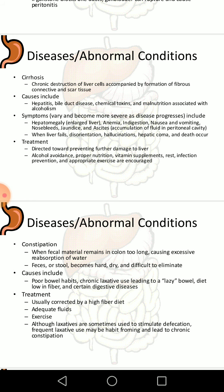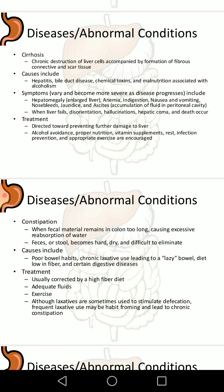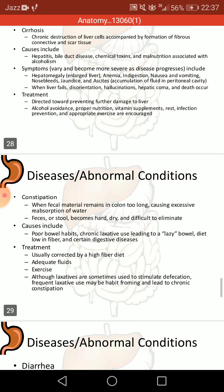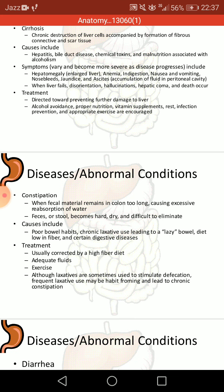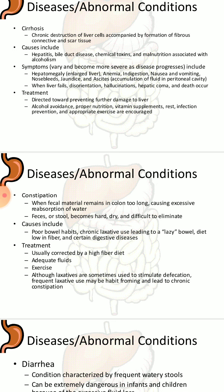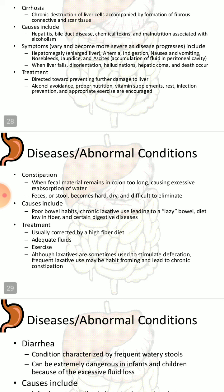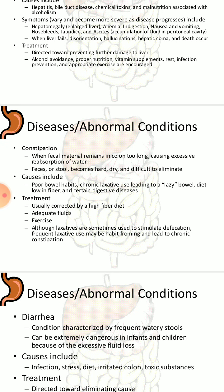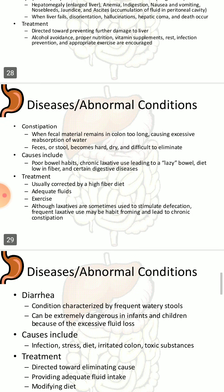Cirrhosis is the chronic destruction of liver cells, accompanied by formation of fibrous connective and scar tissues. Causes include hepatitis, bile duct diseases, chemical toxins, malnutrition, and is associated with alcoholism. Symptoms become more severe as the disease progresses and include hepatomegaly (enlarged liver), anemia, indigestion, nausea, and vomiting. Treatment is directed towards preventing further damage to the liver, avoiding alcohol, and ensuring proper nutrition.